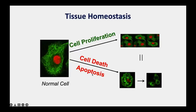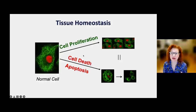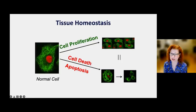One way cells die is called apoptosis, which is a programmed cell death—when the cell intentionally commits suicide because something is not right and it does not want to spread that damage. Our cells are carefully regulated so that the number of cells born exactly equals the number that die, maintaining the exact same number of cells.